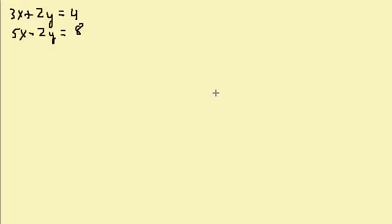Let's look at solving systems of equations — two equations, two unknowns — using the addition method, also called the elimination method. What we want to do is take the two equations and add them together so that one of the variables goes out.